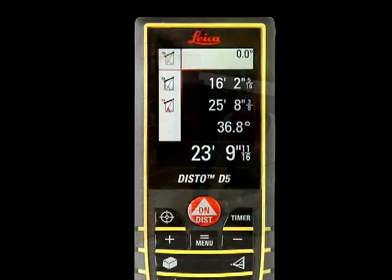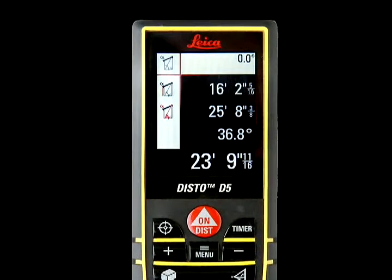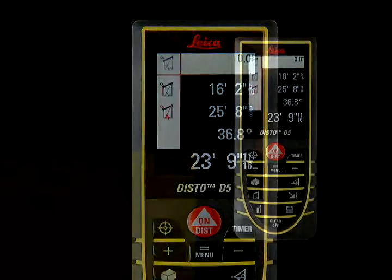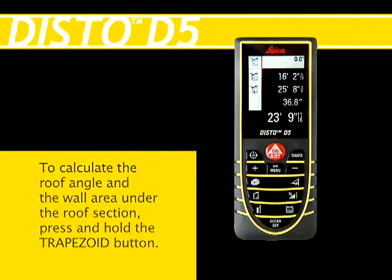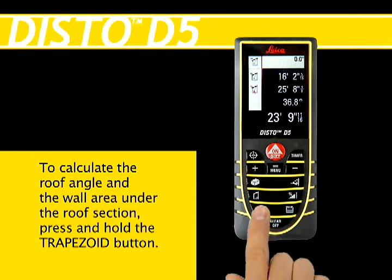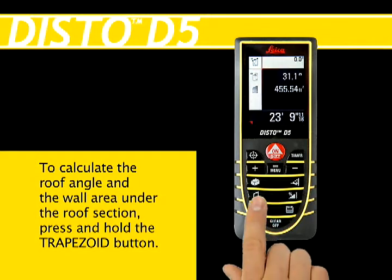The length of the roof will be displayed in the lower right corner. To have the Disto unit calculate the roof angle and the wall area under the roof section, press and hold the Trapezoid key until the unit beeps.